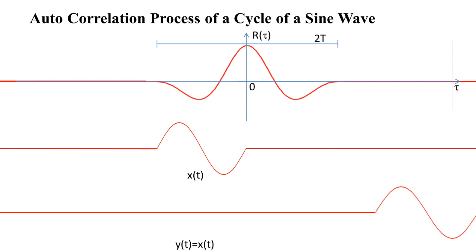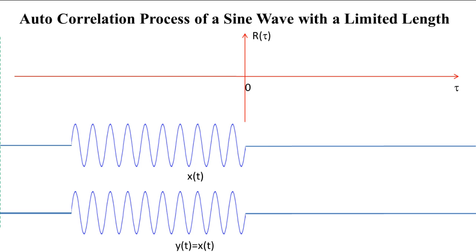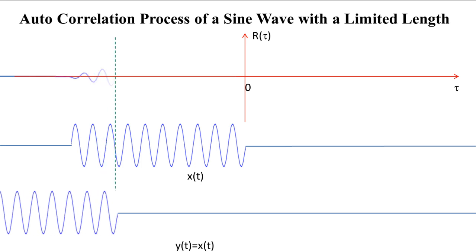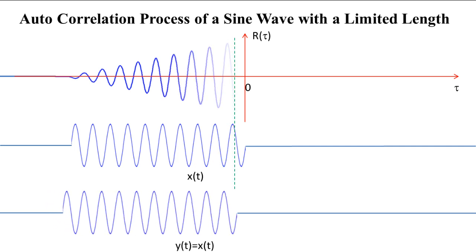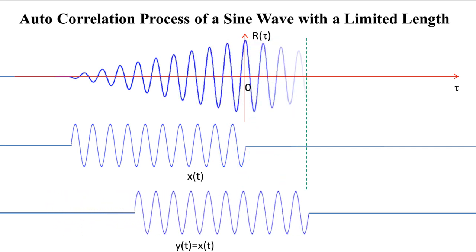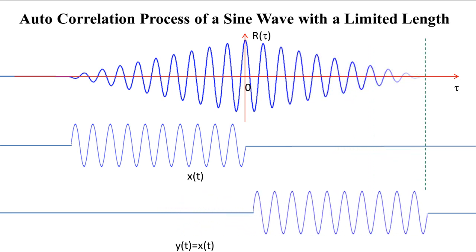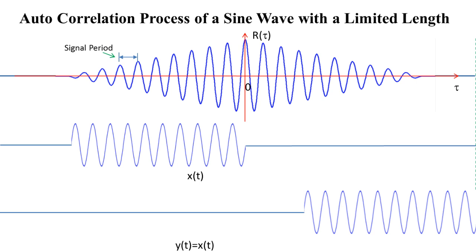Its width doubles that of the sine pulse. This animation shows the autocorrelation process of a sine wave with a limited length. Again, the peak of the autocorrelation function is reached when the time delay tau is zero — that is, when the two sine waves are aligned precisely with each other on the time axis. This autocorrelation function has many peaks and troughs, and the time interval between two adjacent peaks equals the period of the signal.